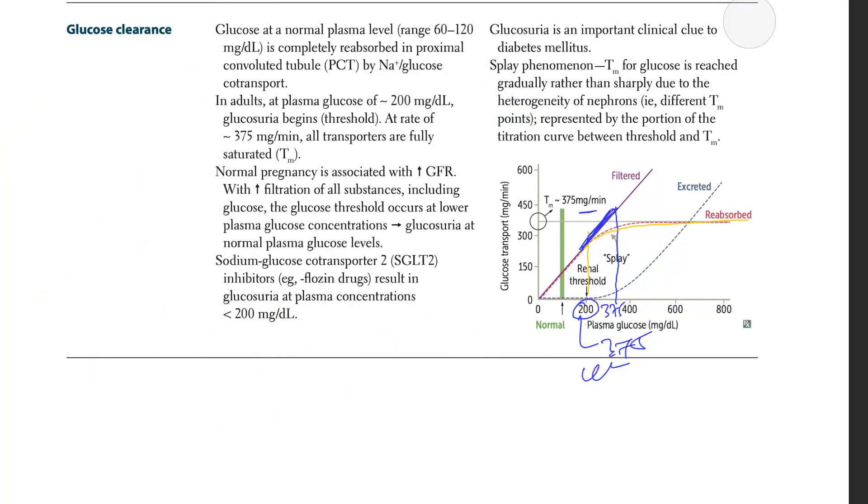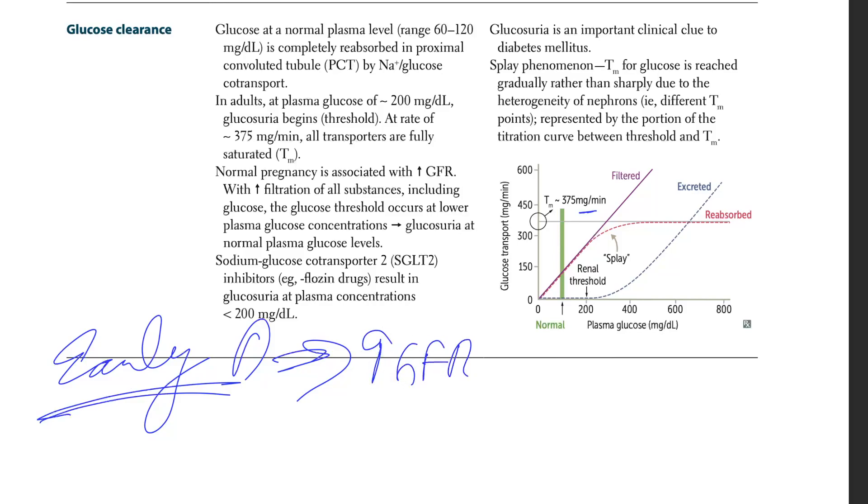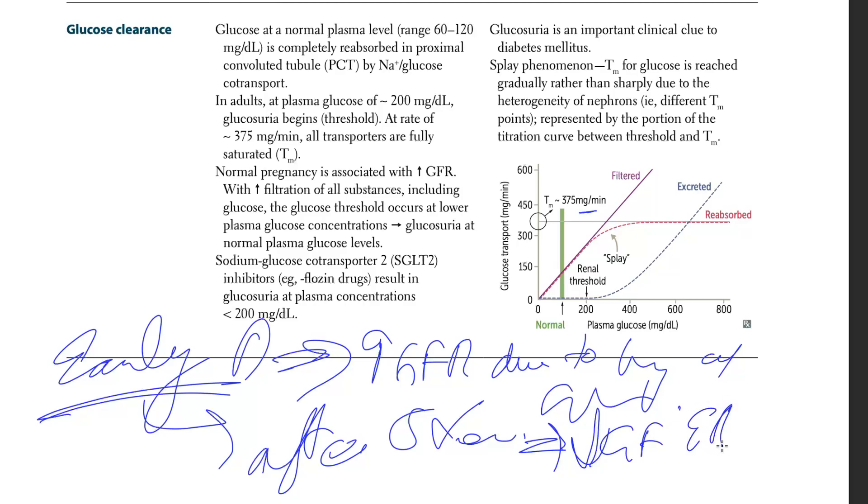One more extra point: in early diabetes, you have an increase in GFR due to hypertrophy of glomeruli. But after 5 years, there's an eventual decrease in GFR and there's albuminuria.